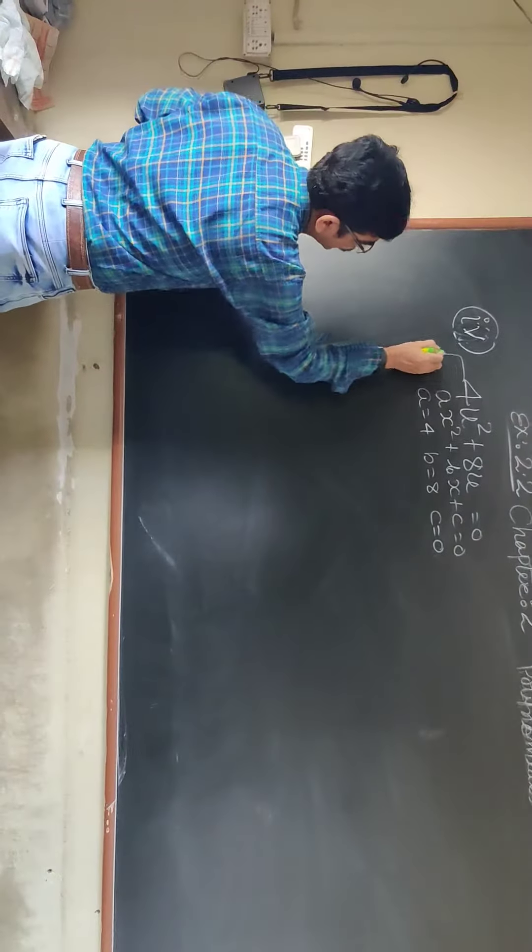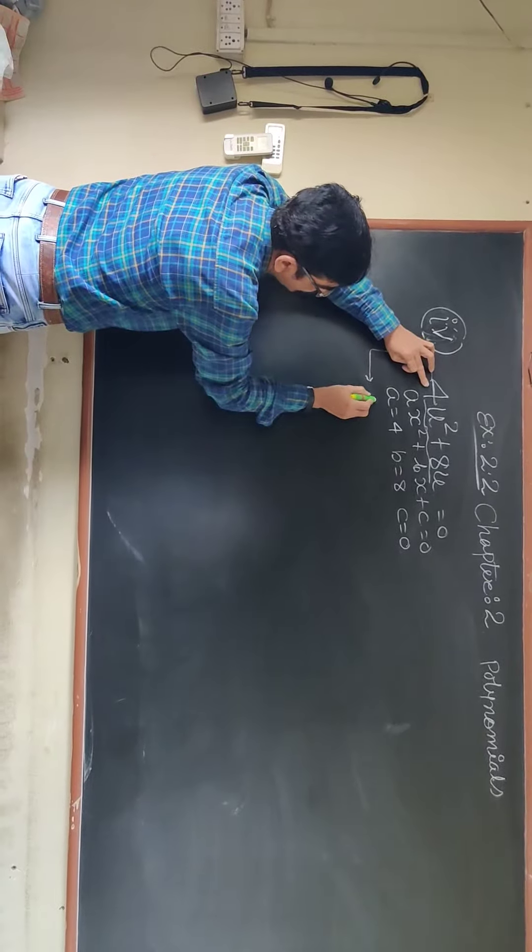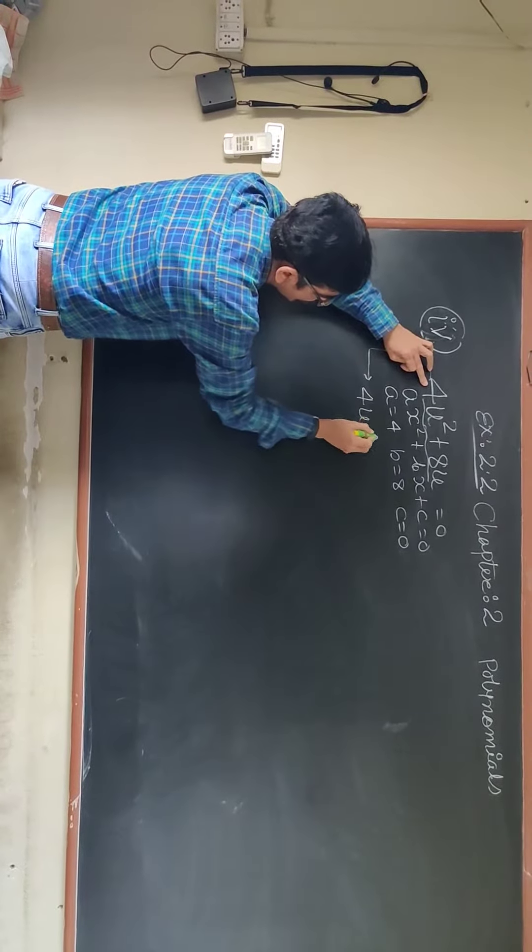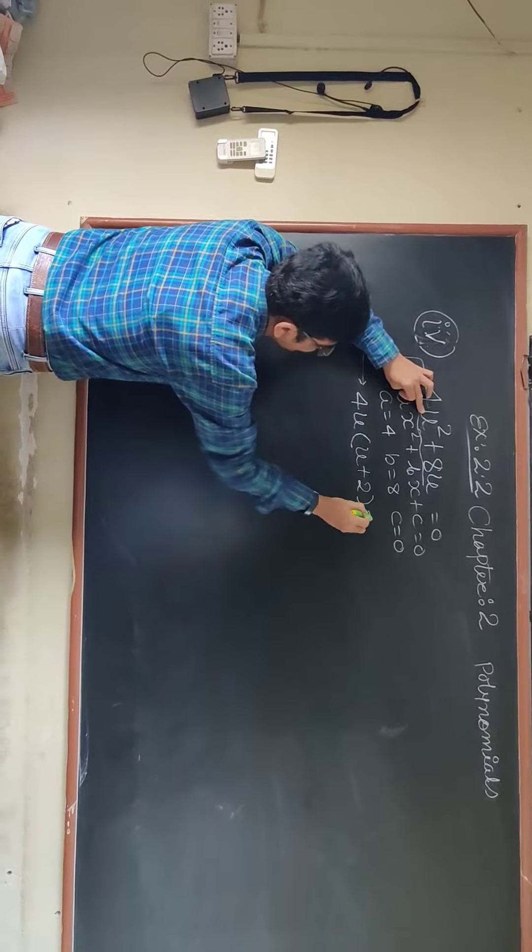Now, how can you factorize this one? So first of all, term rule of factorization, we have to take common. 4u is common, so what will be there? u plus 2, that is equal to 0.